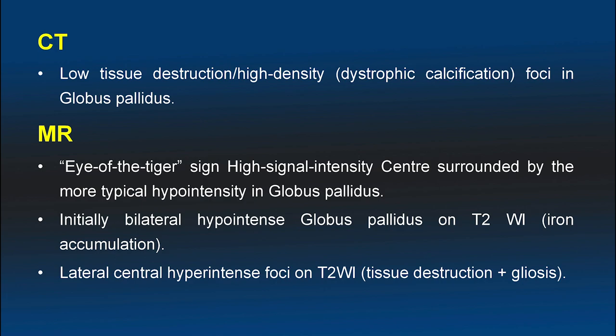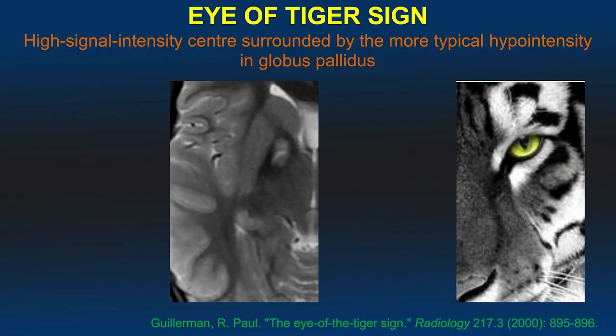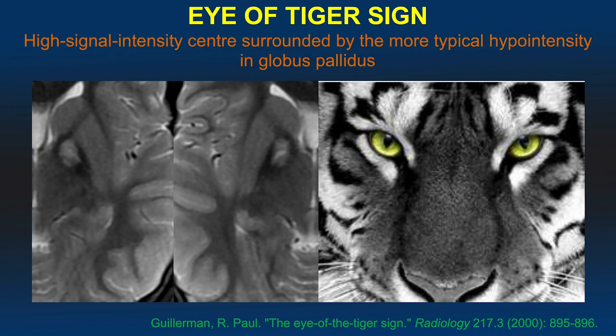On imaging, CT may show dystrophic calcification in the globus pallidus. MRI initially shows bilateral symmetrical hypointense globus pallidus due to iron accumulation. In later phases, associated hyperintense foci within the globus pallidus may appear, secondary to tissue destruction and gliosis. The classical eye of tiger sign consists of central hyperintensity surrounded by hypointense globus pallidus.